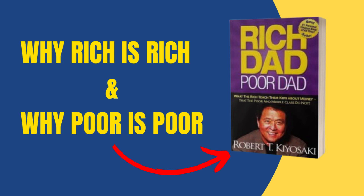The Rich Dad character in the book embodies the Rich Dad philosophy. He is a successful entrepreneur and investor who teaches the narrator, Robert, about money, business and investing. The Rich Dad is depicted as having a different mindset and attitude towards money than the poor dad, who represents the traditional way of thinking about money.